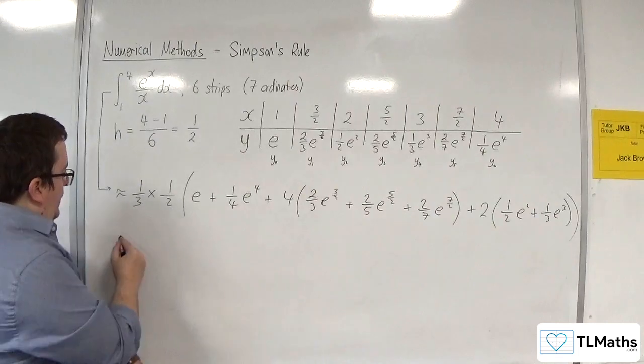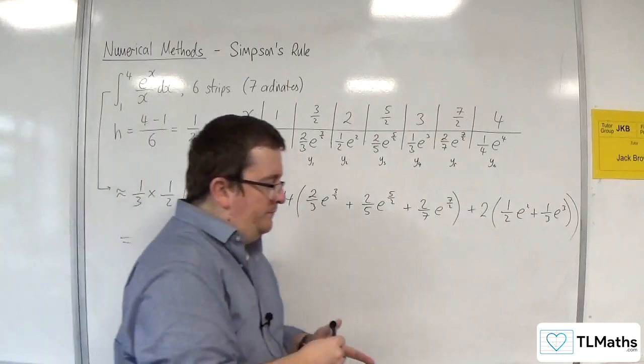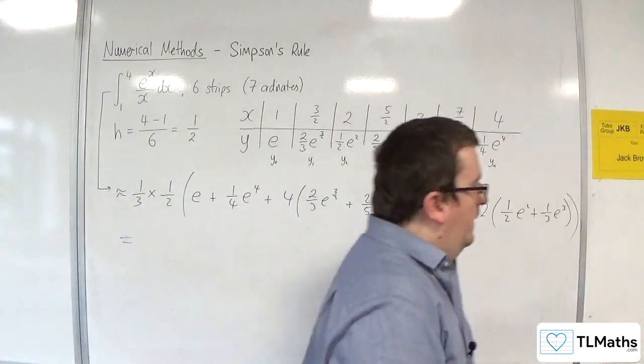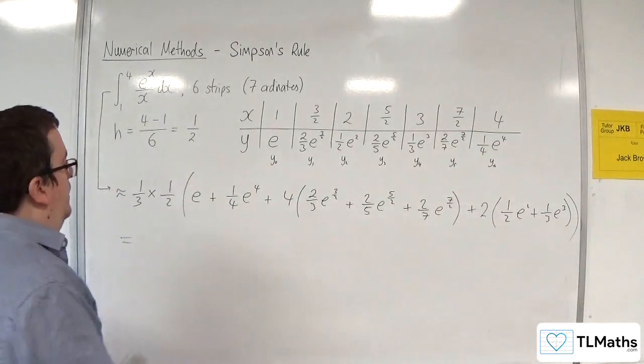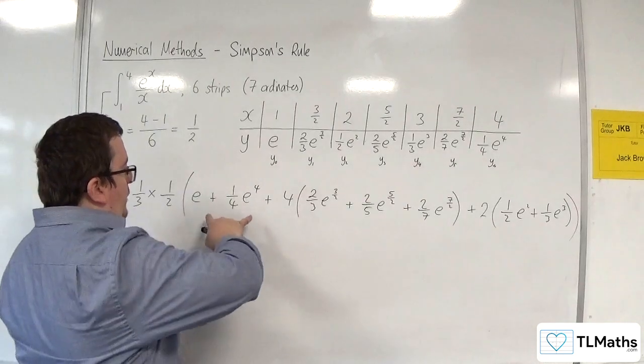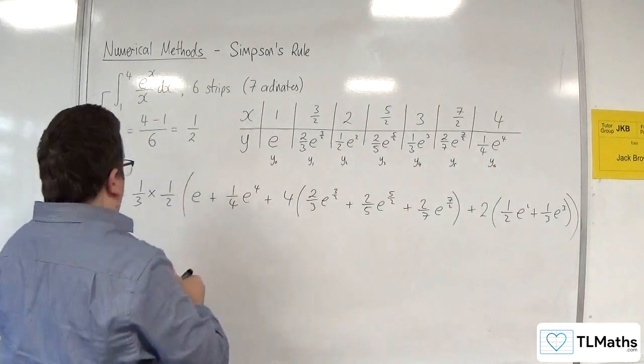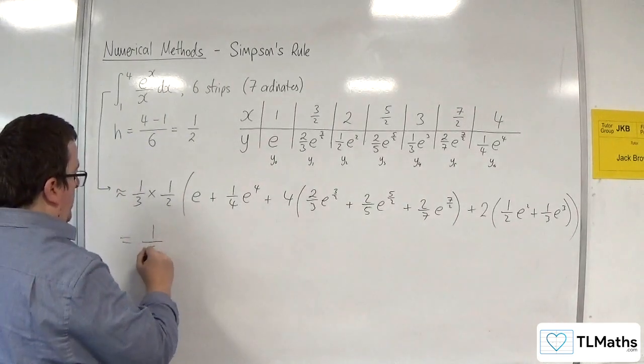So now we need to plug this into our calculator and work it out. Now, best way of doing this would probably be to work out these 3 bits inside the bracket first. Now we've got the 1 sixth, 1 third times a half.